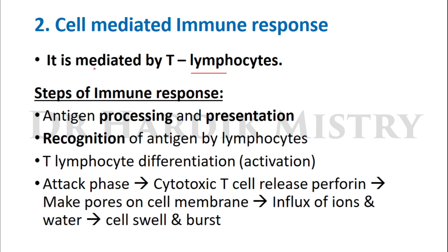The second type is the cell-mediated immune response, mediated by T lymphocytes. The steps are: antigen processing and presentation, recognition of antigen by lymphocytes, T lymphocyte differentiation or activation, and the attack phase. In the attack phase, cytotoxic T cells release a chemical called perforin, which makes pores in the cell membrane. This causes influx of ions and water into the cell, causing the cell to swell and burst.